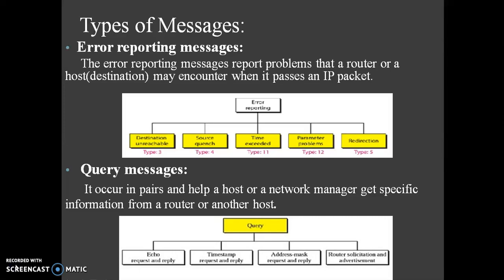Query messages occur in pairs and help a host or network manager get specific information from a router or another host. The first block is echo request and reply. Echo request and echo reply messages are designed for diagnostic purposes. Network managers and users utilize this pair of messages to identify network problems. The next block is timestamp request and reply. Two machines — hosts or routers — can use timestamp request and timestamp reply messages to determine the round trip time needed for an IP datagram to travel between them.